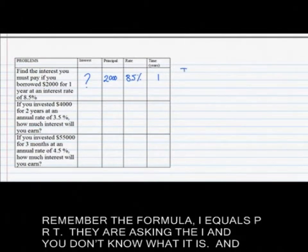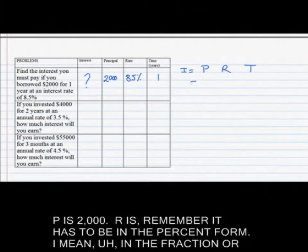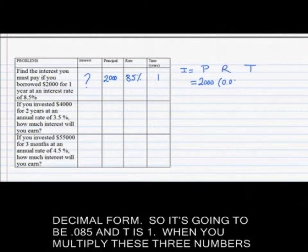Principle is $2,000 because that's how much you started with. The rate is going to be 8.5%, and we are talking about one year. So if you remember the formula, I equals PRT, they are asking for I, and you don't know what it is. P is $2,000, R is 0.085 in decimal form, and T is 1. When you multiply these three numbers, you're going to get $170, which is your answer.